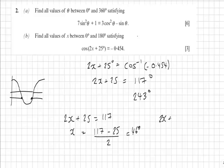We also have 2x plus 25 is equal to 243. So x in this case would be 243 minus 25 over 2, which is 109 degrees.